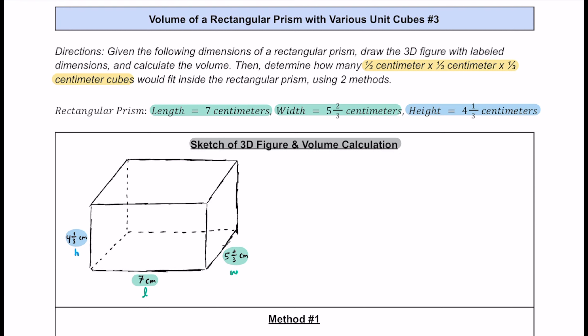Now that we know each dimension of this rectangular prism, let's find the volume using the formula. The formula for rectangular prisms is the area of the base (capital B) multiplied by the height (lowercase h). The area of the base is length times width, so we substitute those in and then multiply by the height.